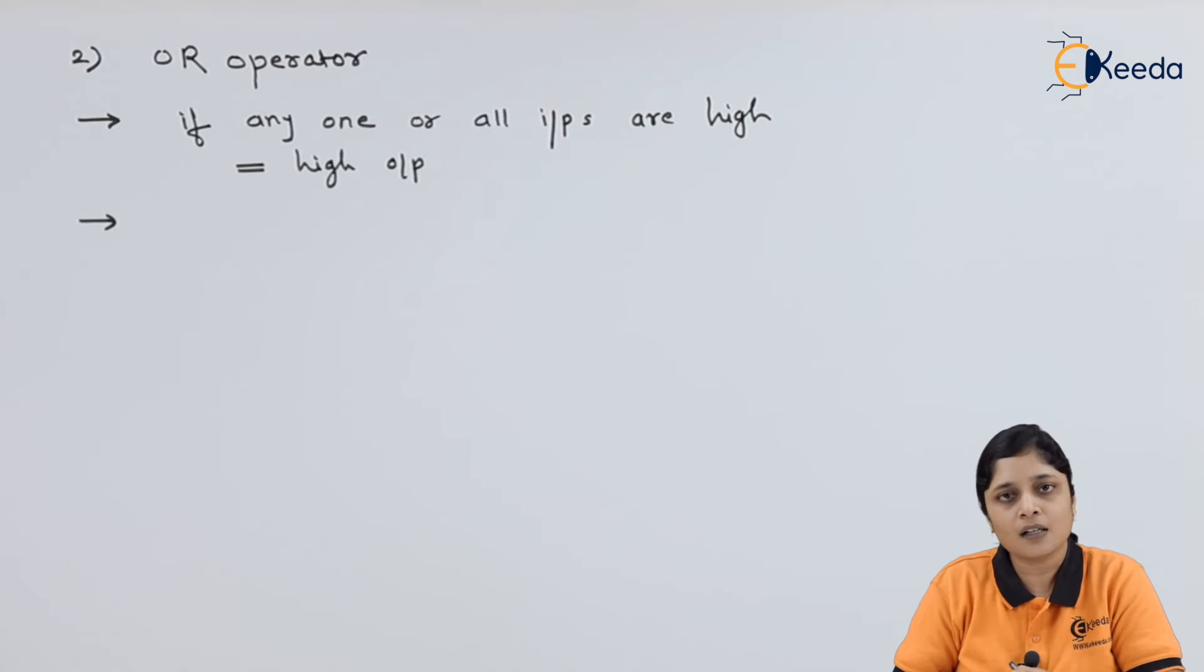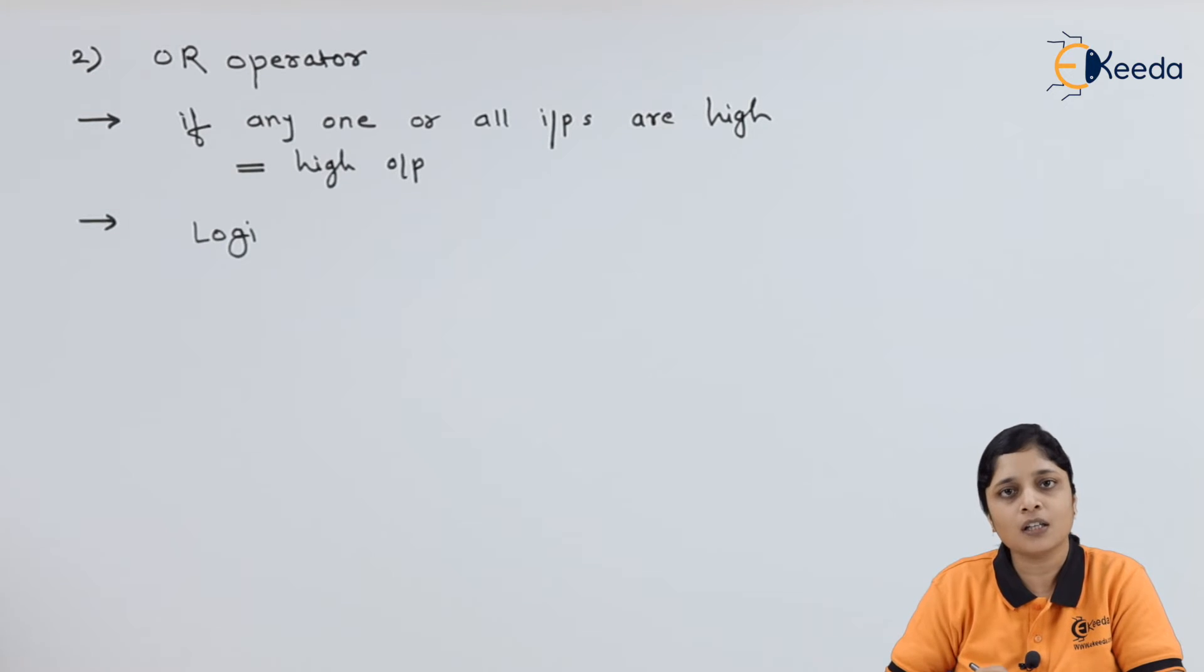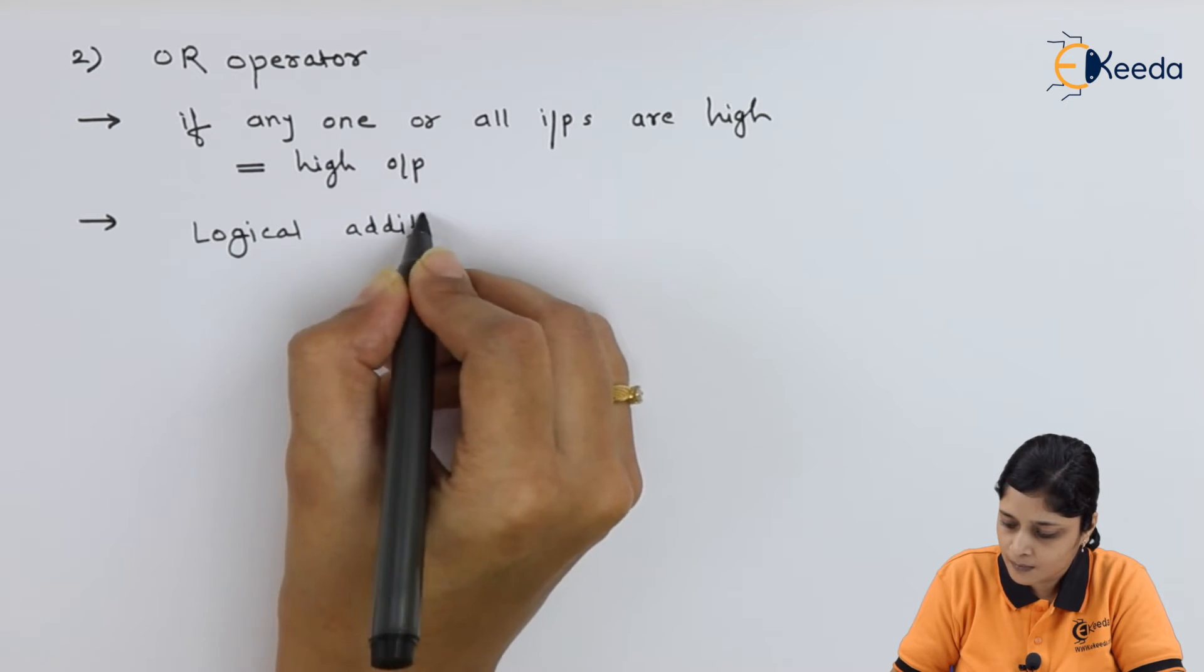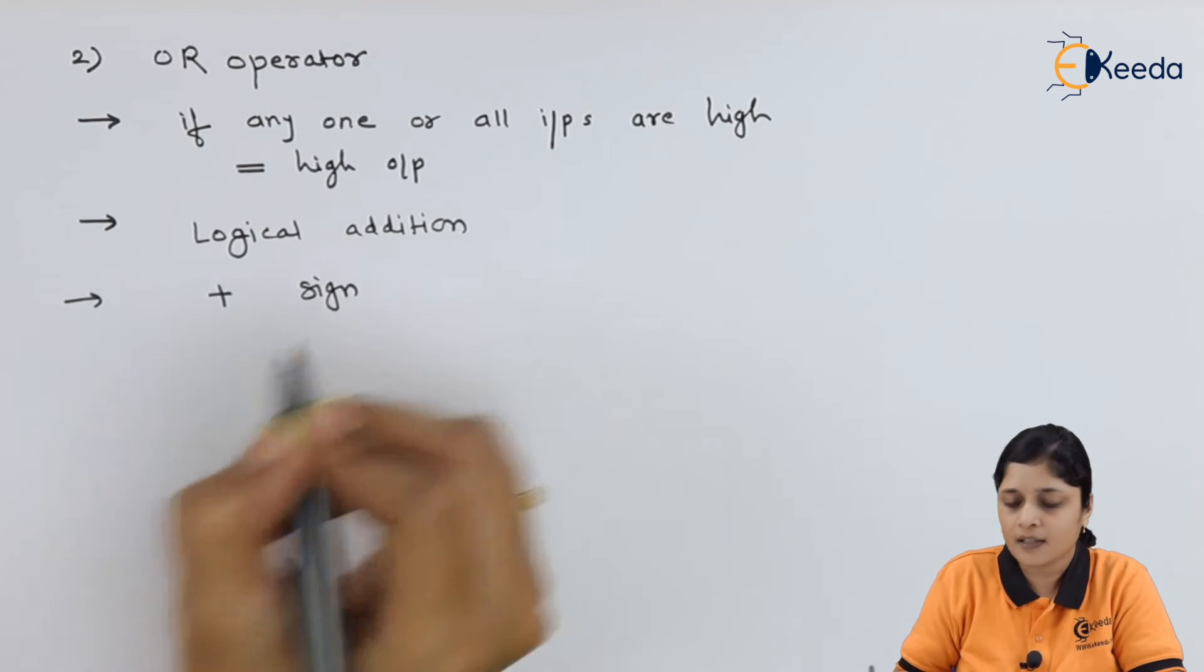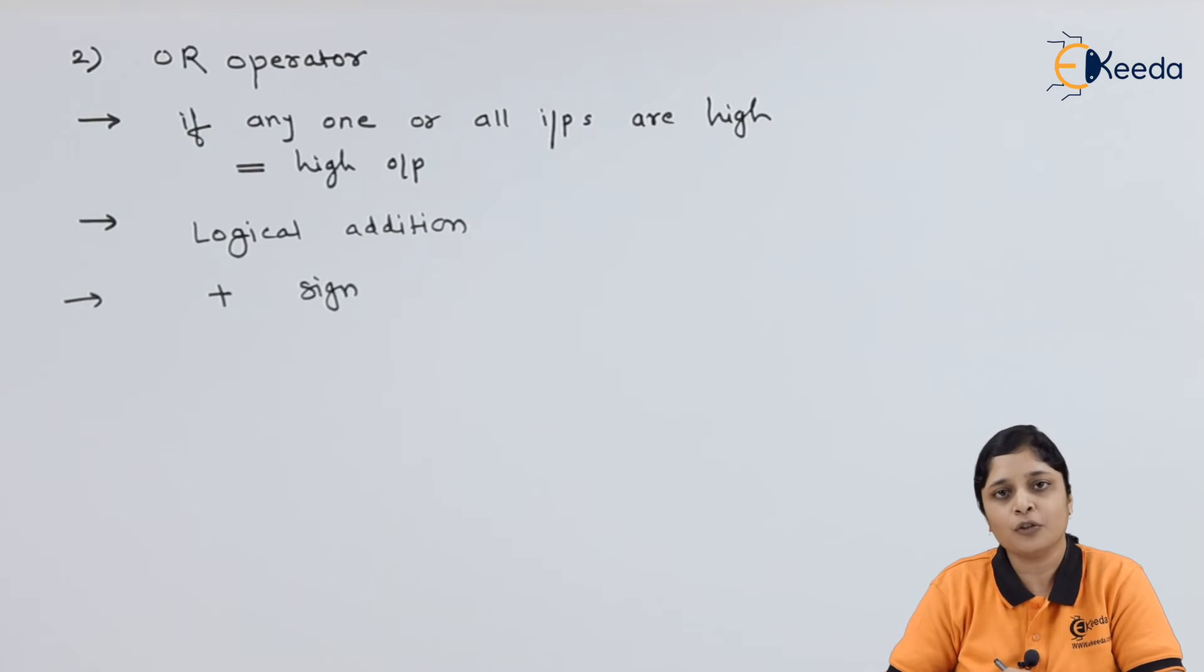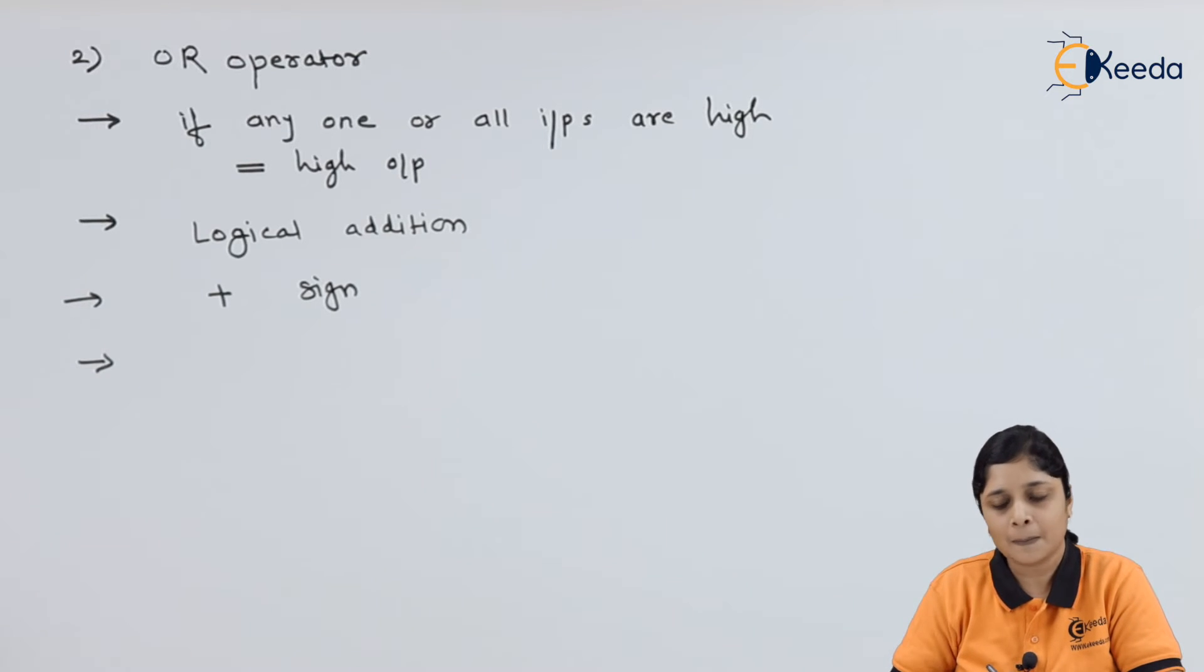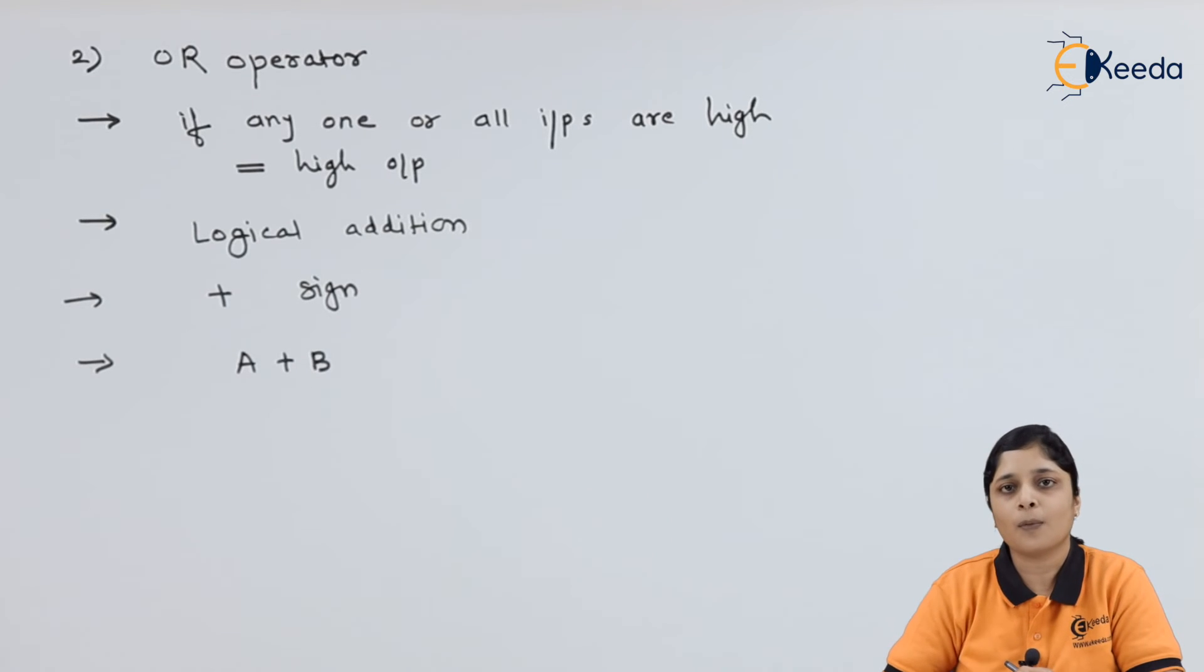It is also called logical addition. You can say here it is not normal addition, it is logical addition. Here, plus sign is required between two variables. Suppose you have two variables A and B, then A plus B will give you OR operator.